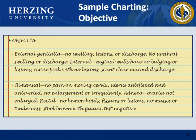Objective data: External genitalia — no swelling, lesions, or discharge; no urethral swelling or discharge; internal vaginal walls with no bulging or lesions; cervix pink with no lesions, scant clear mucoid discharge. Bimanual exam — no pain on moving cervix; uterus anteverted and anteflexed, no enlargement or irregularity; adnexa — ovaries not enlarged. Rectal — no hemorrhoids, fissures, or lesions; no masses or tenderness; stool Hemoccult with guaiac test negative.